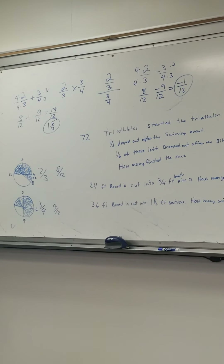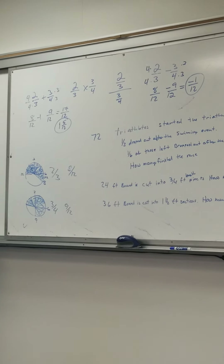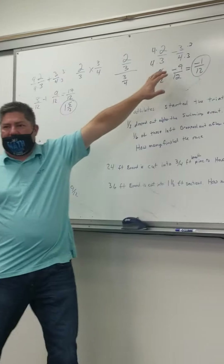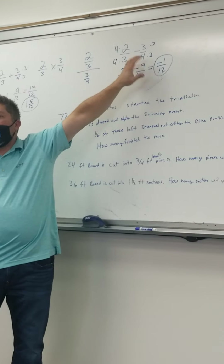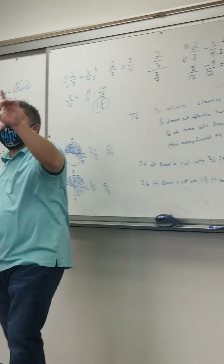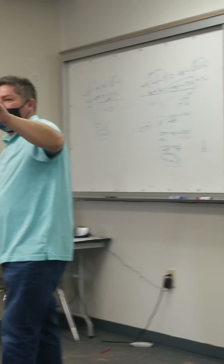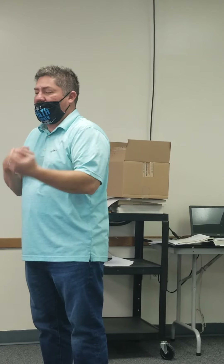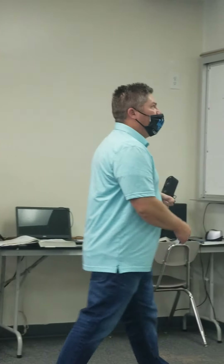That's my answer — negative one twelfth — because I have two-thirds in the positive direction and negative three-fourths in the negative direction. I end up at negative one twelfth. Did I add here and subtract here? Yes. So I needed a common denominator. That's the only time when you're doing fractions you need common denominators — when you're adding or subtracting.